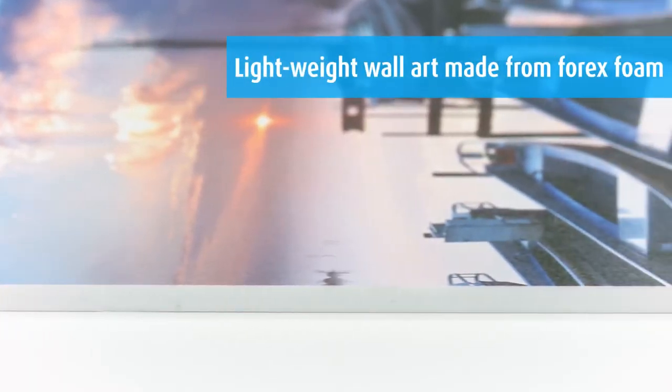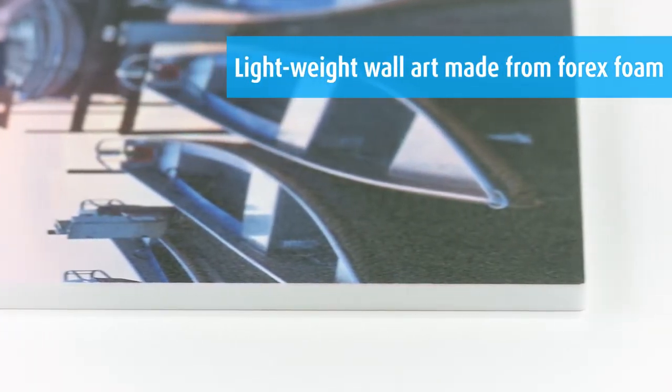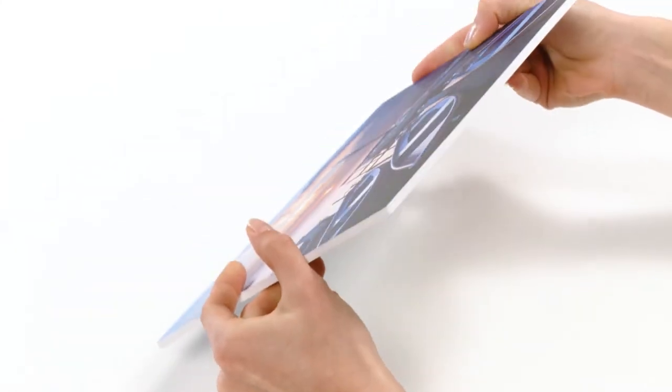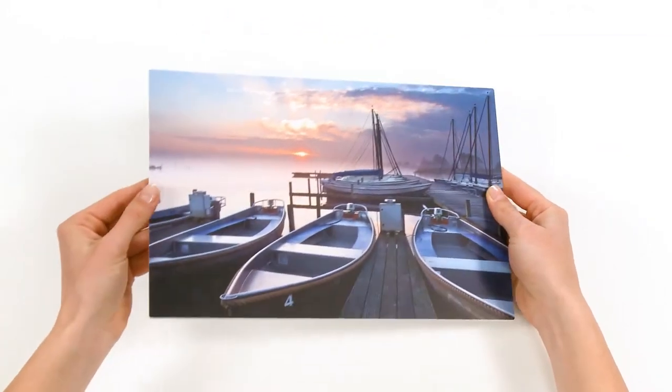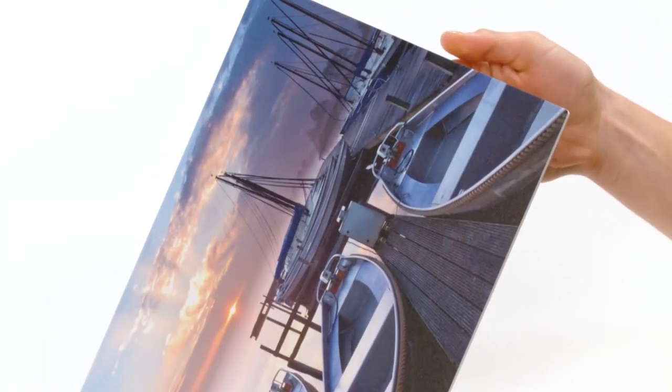4x is a white hard foam board made from PVC. The material is stable and also very light. Hanging a 4x print is therefore very easy, especially on thin or weak walls.